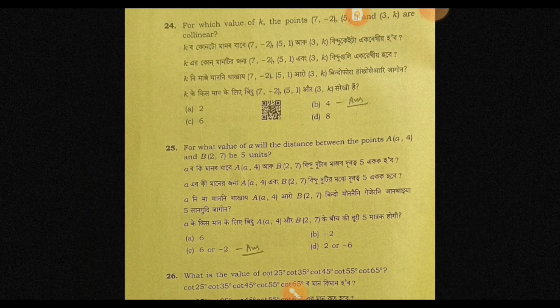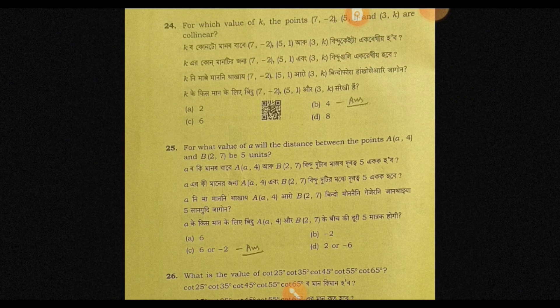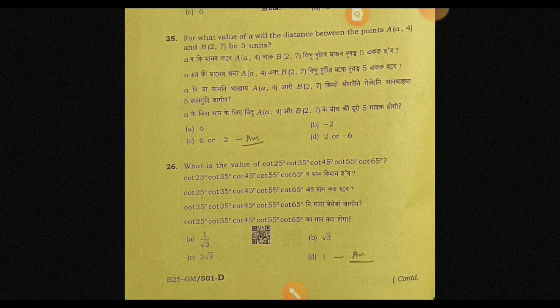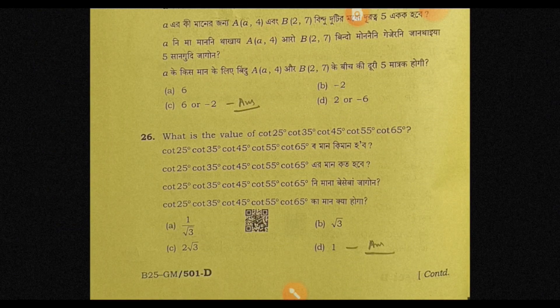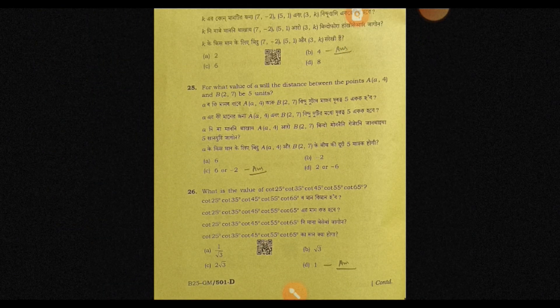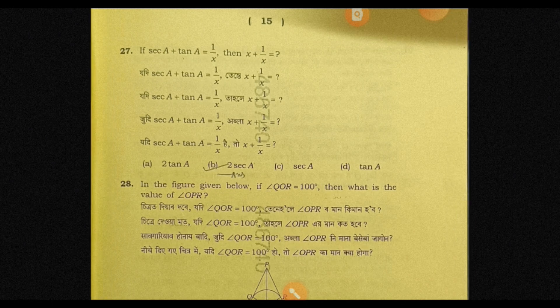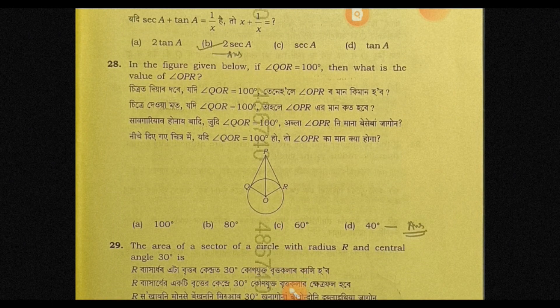Question number 24, answer option B — 4. Question number 25, answer option C — 6 or minus 2. Question 26, answer option D — 1. Question 27, answer option B — 2.